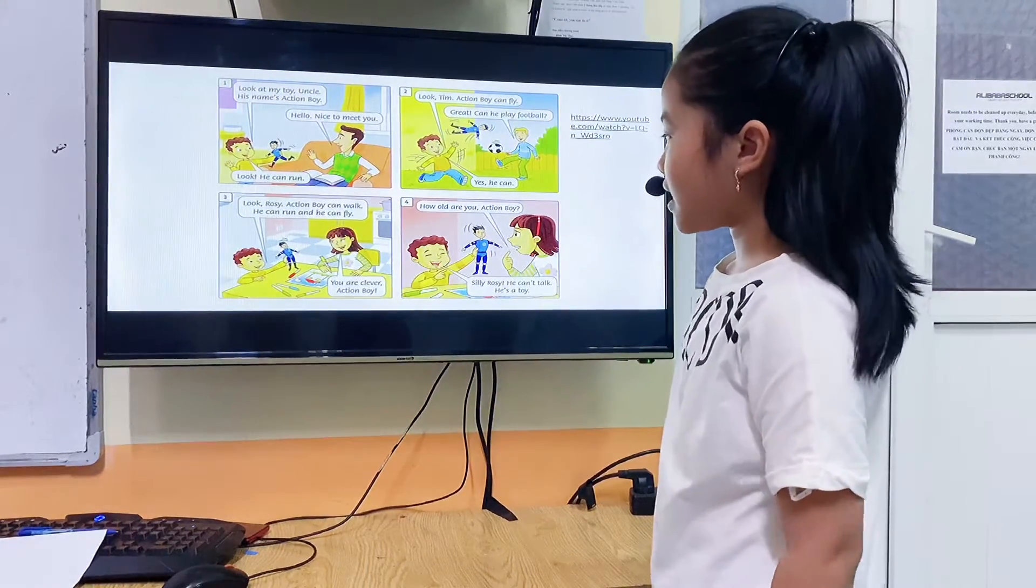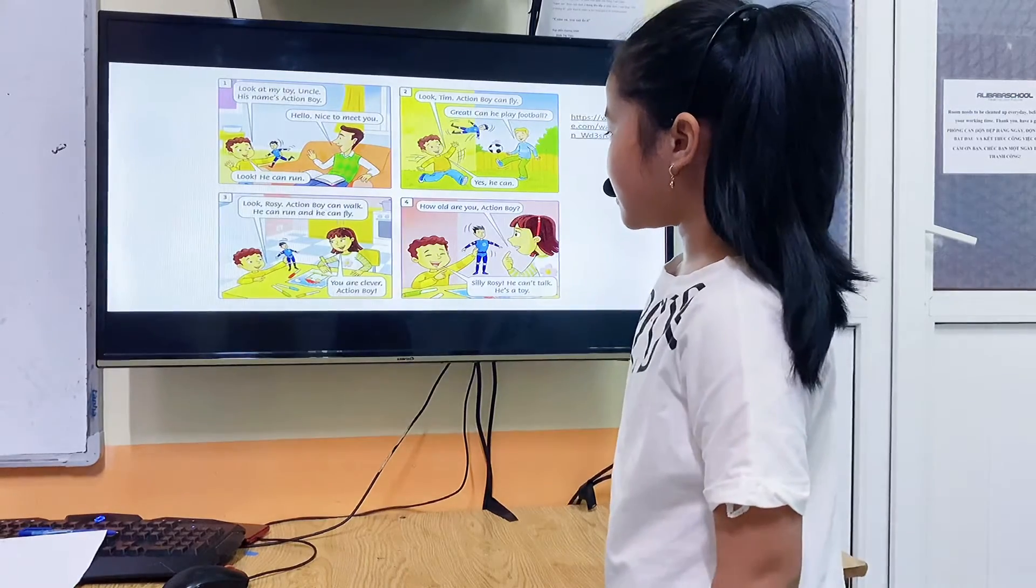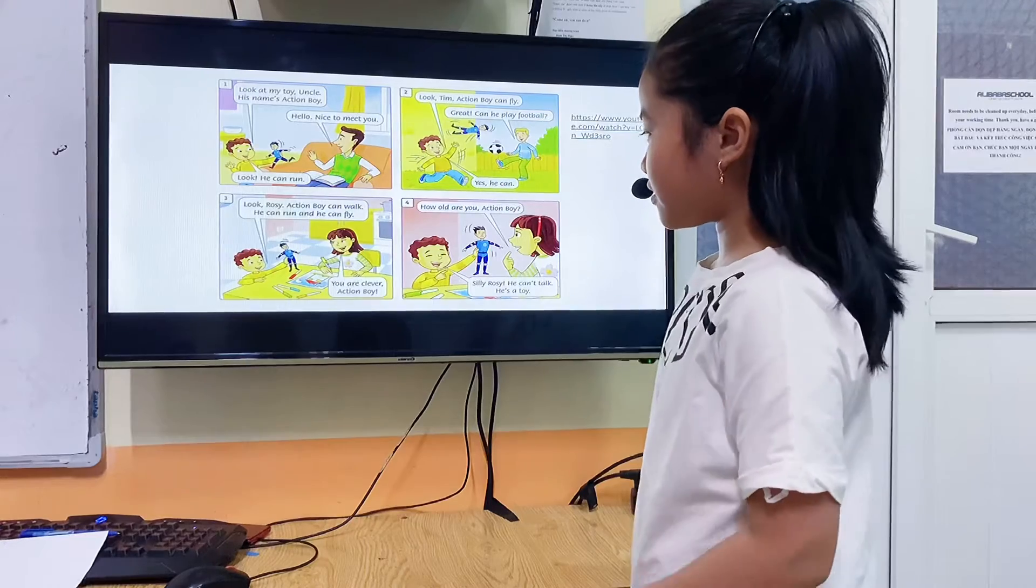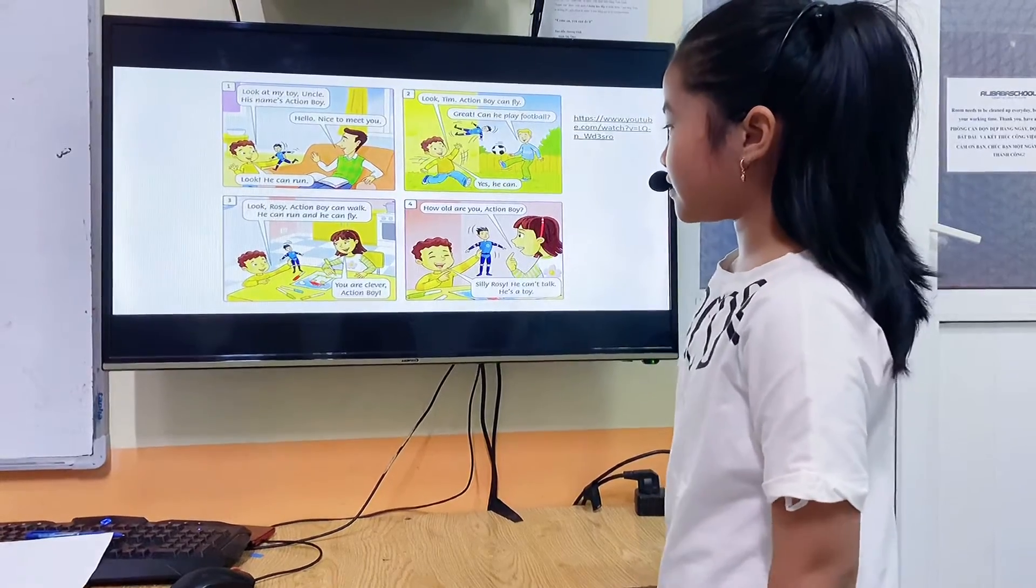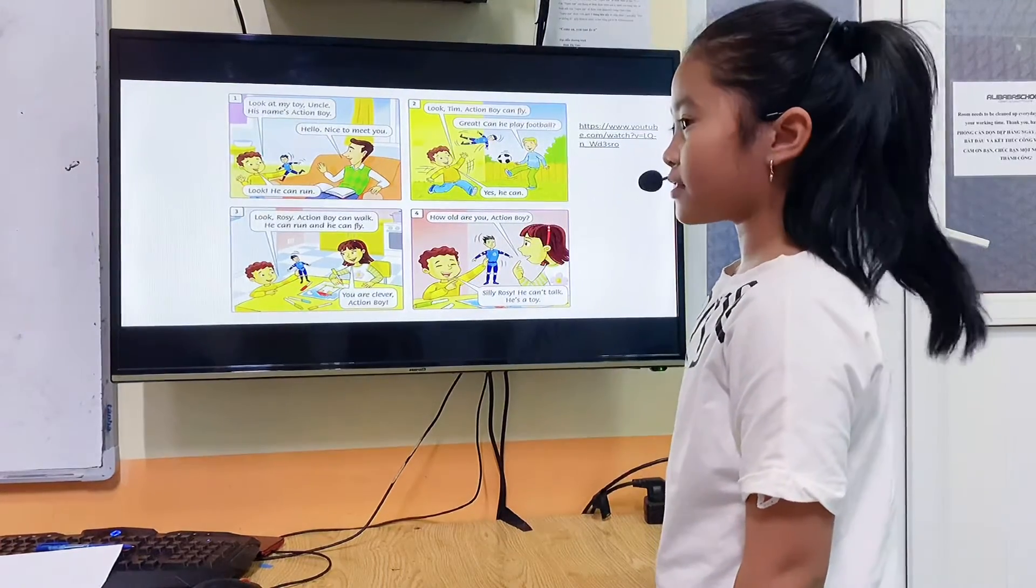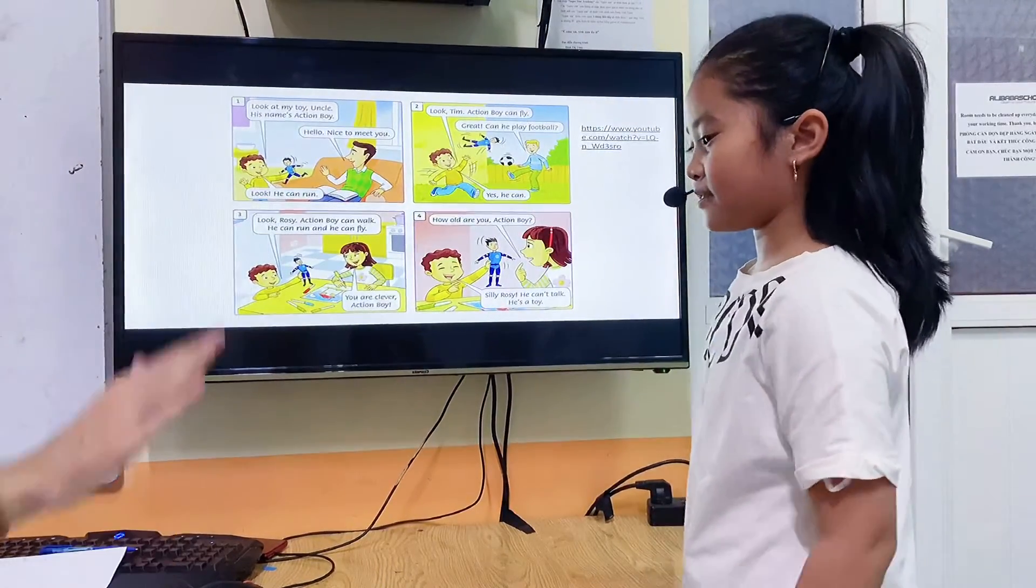What is Rosie doing? Rosie is drawing. Drawing. Very good. What is Tim doing? Tim is playing football. Very good. Awesome.